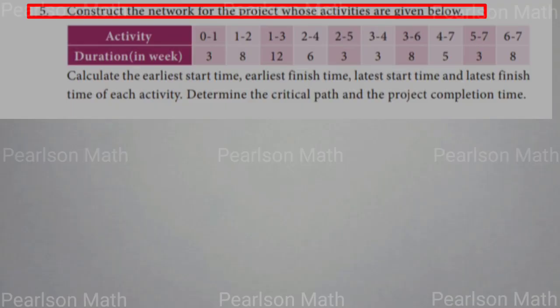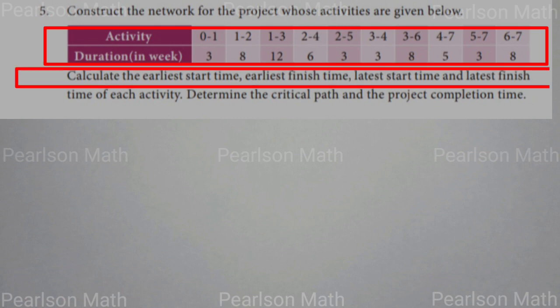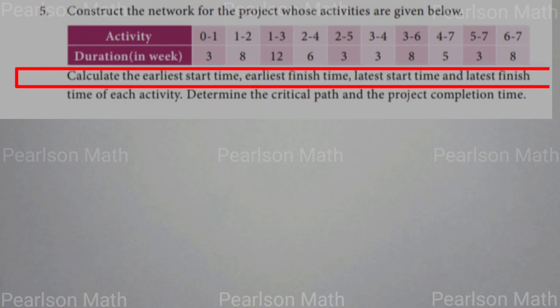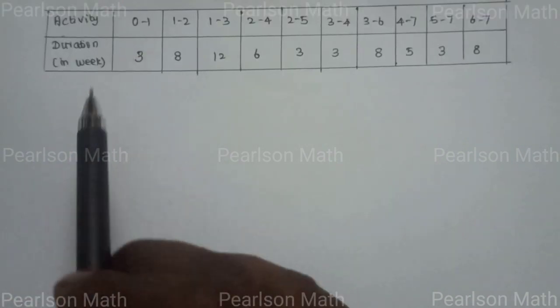Students, exercise 10.25. Construct the network for the project whose activities are given in the tabular column. Calculate the earliest start time, earliest finish time, latest start time, and latest finish time of each activity. Determine the critical path and project completion time. Let's look at the tabular column.